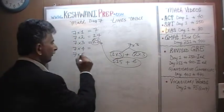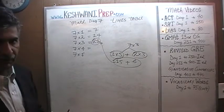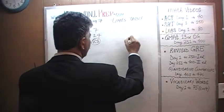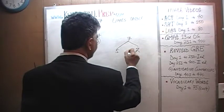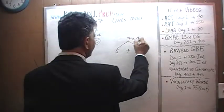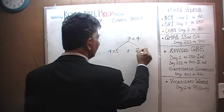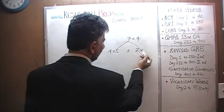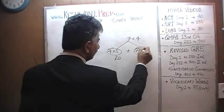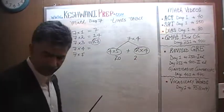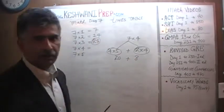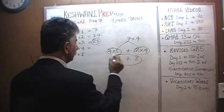How about 7 fours? For 7 fours we do the same exact trick — nothing different. Break up the 7 into a 5 and a 2. We have 4 of them. So we need 4 fives and 4 twos. 4 fives are 20 and 4 twos are 8. And the answer is 7 fours are 28.